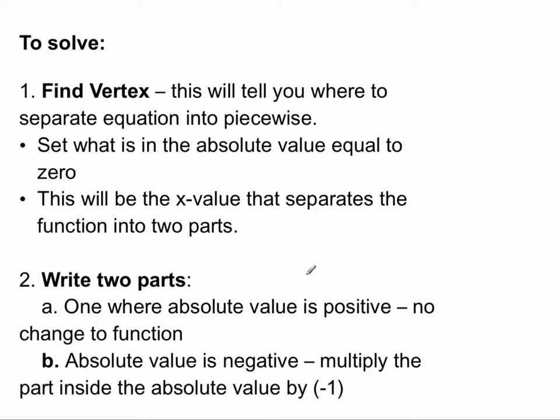Then you write it into two parts. One where the absolute value is positive - no change to the function. And one where the absolute value is negative - multiply the part inside the absolute value by negative one.